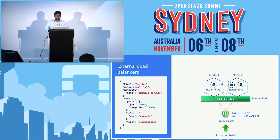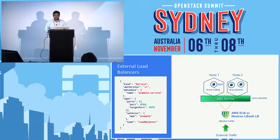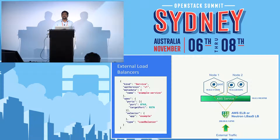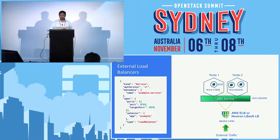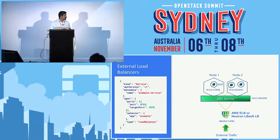To drill more into the advantages of running Kubernetes on a cloud provider: you might have applications like front-ends and API gateways in your deployment, and they could request an external load balancer. Kubernetes can work with the underlying cloud to create a load balancer — if it's AWS, it could be ELB, or if it's OpenStack, it could talk to Neutron LBaaS and create a load balancer and route the traffic to your corresponding nodes, which will then get routed to your specific services.